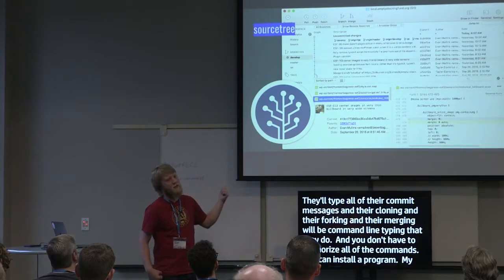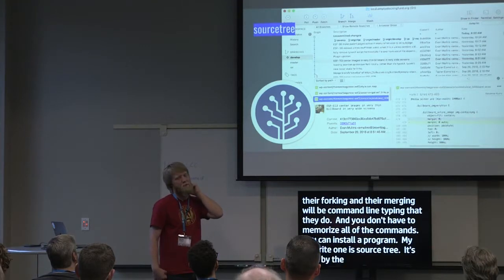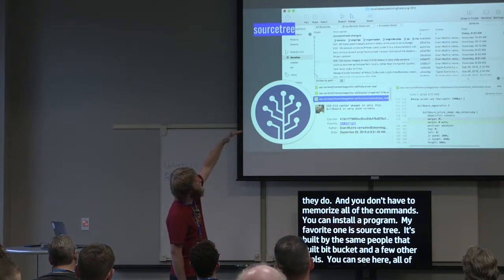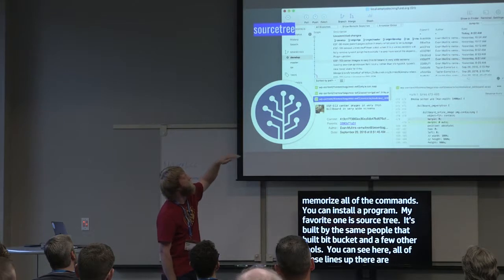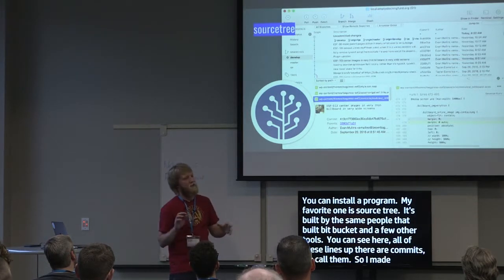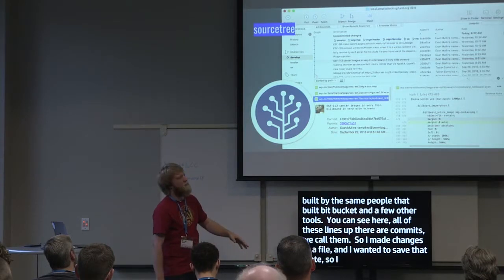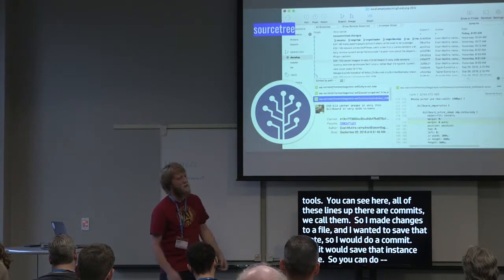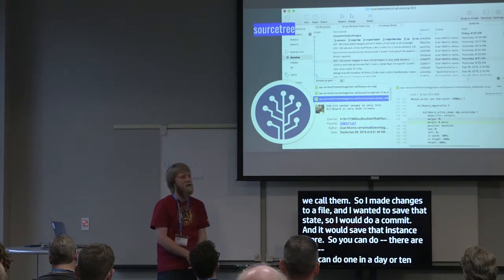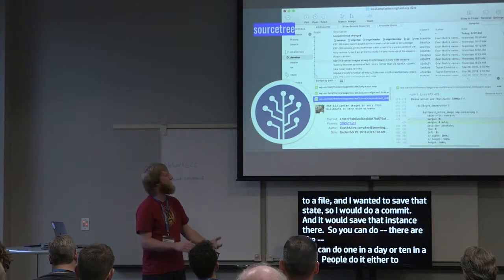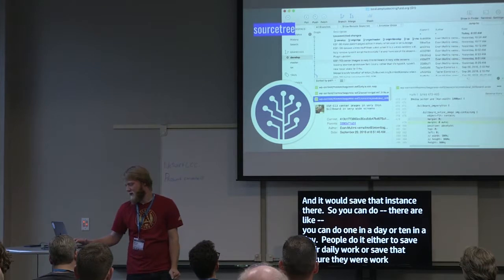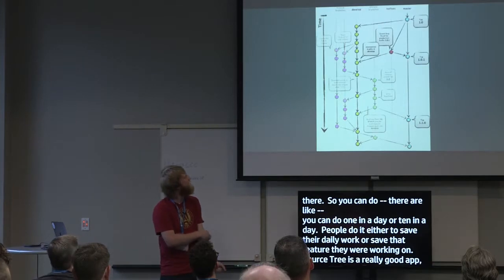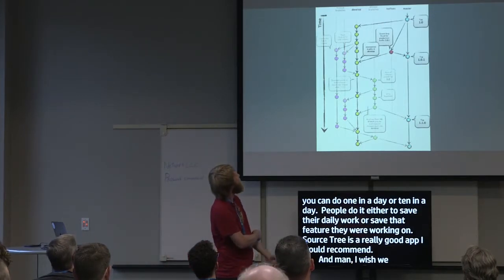My favorite Git GUI is Sourcetree, built by the same people that built Jira and Bitbucket. You can see all of these lines representing commits — so I made changes to a file and wanted to save that state, so I did a commit, which saves that instance. You can do one commit in a day or ten in a day — people do it either to save daily work or to save a feature they were working on.